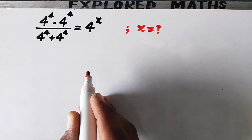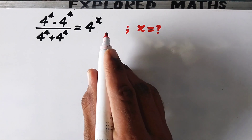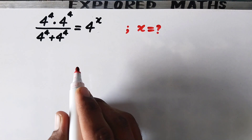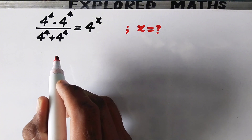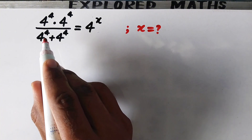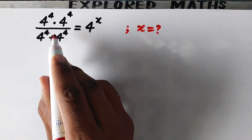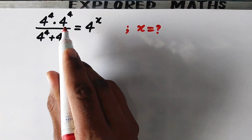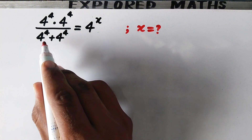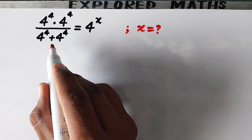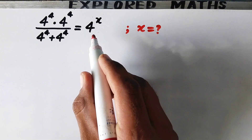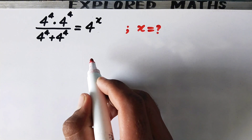Hello everyone and welcome to my channel Explode Maths. In this video we are going to solve a very nice exponential problem: 4 to the power 4 times 4 to the power 4, divided by 4 to the power 4 plus 4 to the power 4, is equal to 4 to the power x.